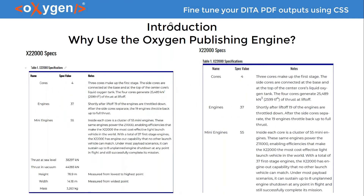Here's a small example: on the left is the Web Help output and on the right is the same content as PDF output. As you can see, the tables, fonts, and colors are similar. The only difference is the page display — the PDF uses an A4 page layout while the web help uses full browser screen display.